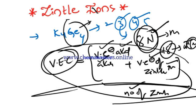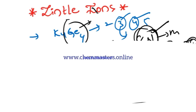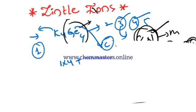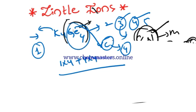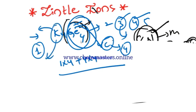Looking at K₄Ge₄: potassium is an alkali metal and contributes one valence electron; there are four of them, so that gives 1 × 4. Germanium belongs to the carbon family and has four valence electrons; there are four germanium atoms, so that gives 4 × 4. Germanium with a negative charge is acting as the Zintl ion; potassium is acting as the counter ion. There are four Zintl ions, so we divide by four.